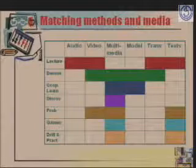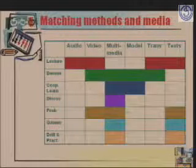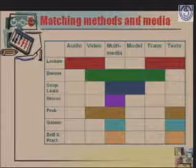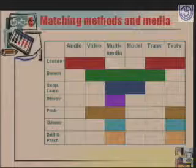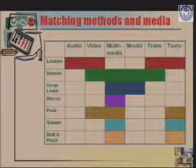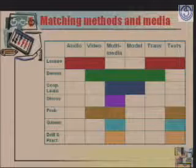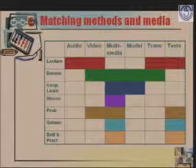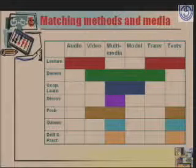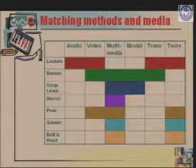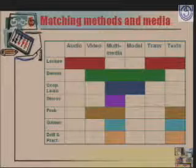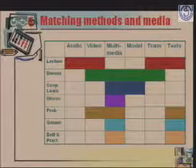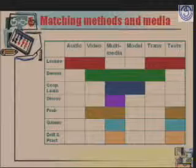Look at this slide carefully — this is a suggestion for how one can match methods and media. On the left-hand side are methods: lectures, demonstration, cooperative learning, discovery method, problem solving, instructional games, and drill and practice. On the right-hand side are media: audio, video, multimedia, models, transparencies, graphics, pictures, and text. You can see what kind of media is applicable for each method. For example, in a lecture situation you can use audio, video, transparencies, slides, or text like a handout. For a demonstration method, video could be very good, along with multimedia, actual models, and transparencies.